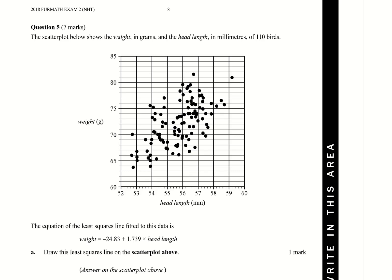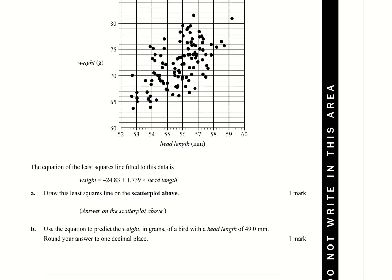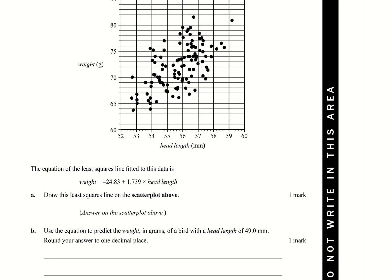In this video we're going to go through question 5 from exam 2 from the 2018 NHT exam. It's got a scatter plot showing weight in grams and head length in millimeters of 110 birds. The equation of the least squares line is fitted as below. Remember, this is y equals a plus bx. Keep that in mind if you're trying to make that link, because they've been given it in variables. When you put it in your calculator, you need to make sure you're using the right things there.